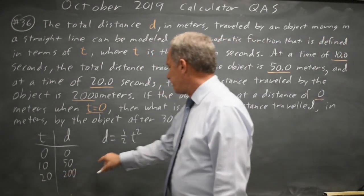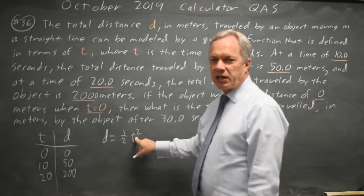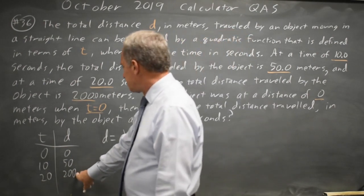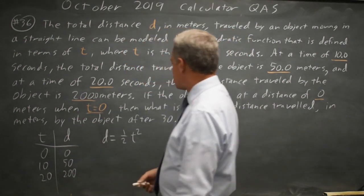And at T equals 20, 20 squared is 400. Half of 400 is 200. And that matches the distance of 200.